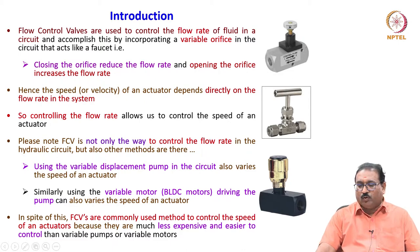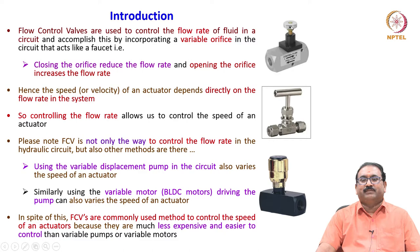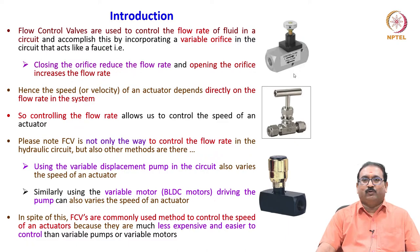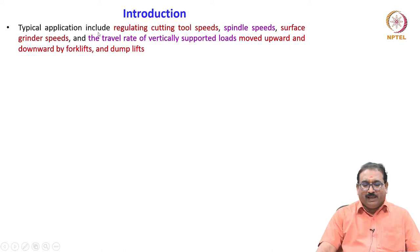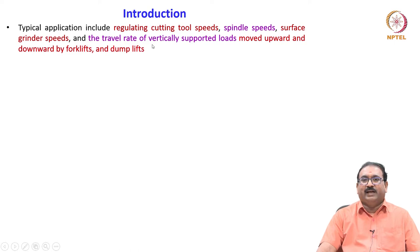Some pictorial views are shown here — a commercially available flow control valve. The flow enters here and exits here. In the passage there is a stem along with a needle, which can be moved up and down using the open/close knob. If you open it, maximum flow passes from inlet to outlet. If you close the knob, the flow is restricted — this is like a tap. Typical applications include regulating cutting tool speeds, spindle speeds, surface grinder speeds, and the travel rate of vertically supported loads moved up and down by forklifts and dump lifts.